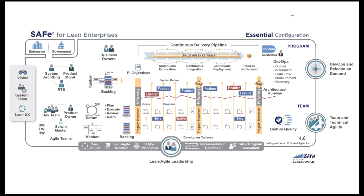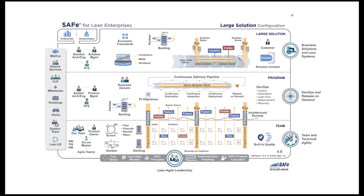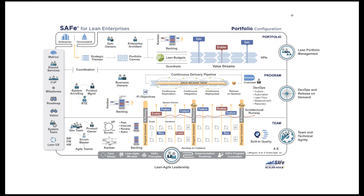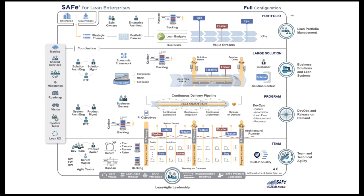Hi, this is John Leslie, and in this video I'm going to be showing you how to implement all four configurations of SAFe, the Scaled Agile Framework, in Favro. We'll start with Essential SAFe, then move to Large Solution, to Portfolio SAFe, and finally to Full SAFe. I'll also be showing you how to achieve full traceability from Portfolio Level down to Large Solution, to Program, to Team, and all the way back up again.